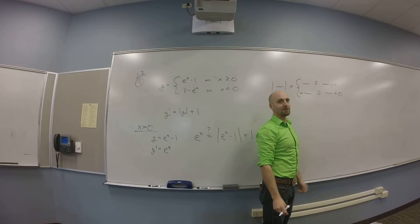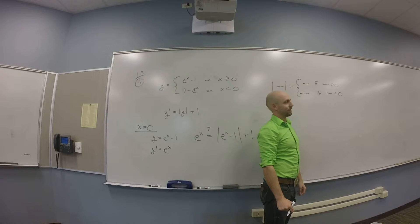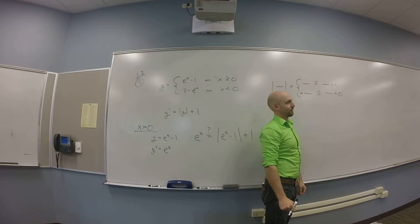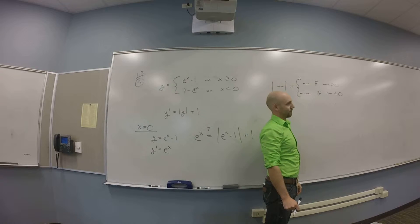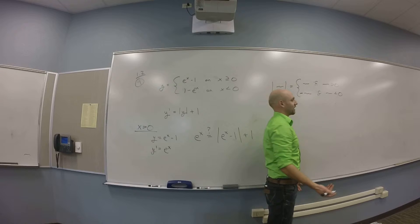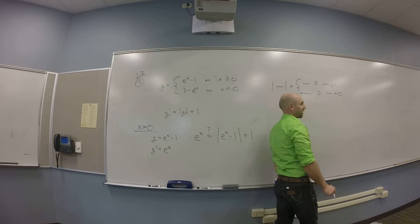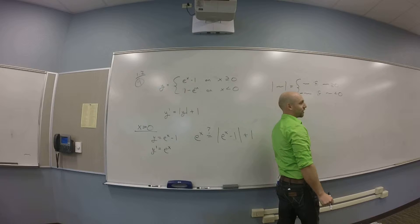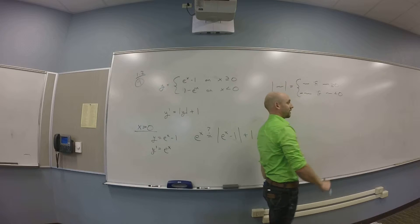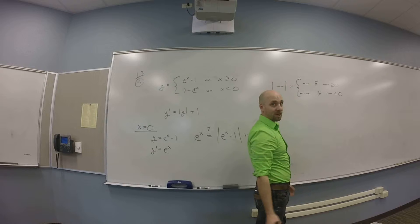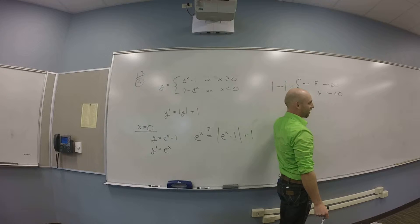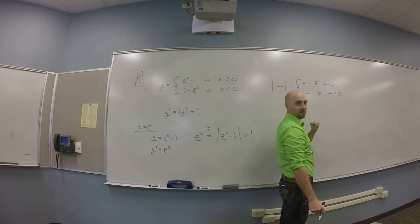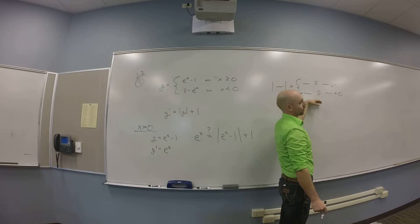And what happens if it's zero? Zero doesn't fit neatly in either case, but the convention is to put it in the top piece — positive zero. The absolute value of zero should be zero, because really this is asking how far from zero the stuff is. Whether you get zero or minus zero, those are both zero. This is really saying that the absolute value function is continuous at zero.